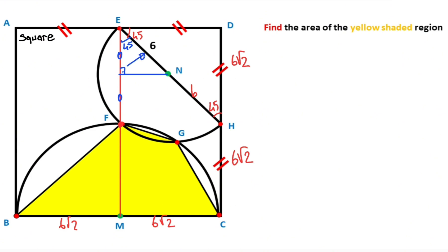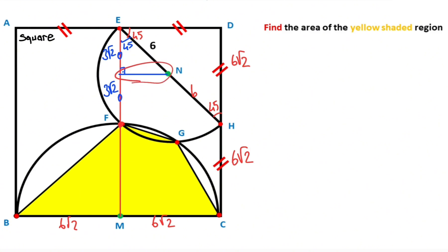And if there are 6 units opposite the 90 degrees, then opposite the 45 degrees must be equal to 3√2. This part is also 3√2, and this part is 3√2 as well.